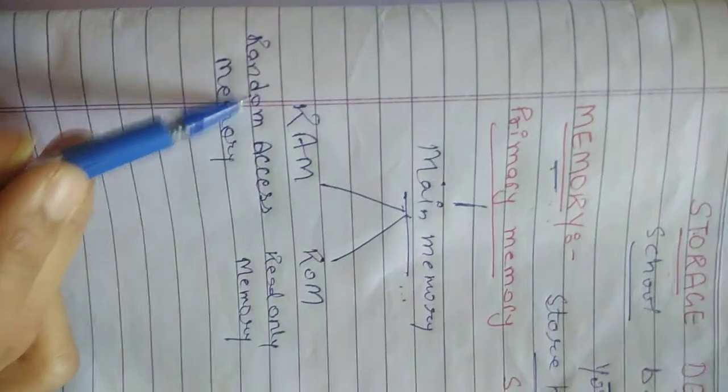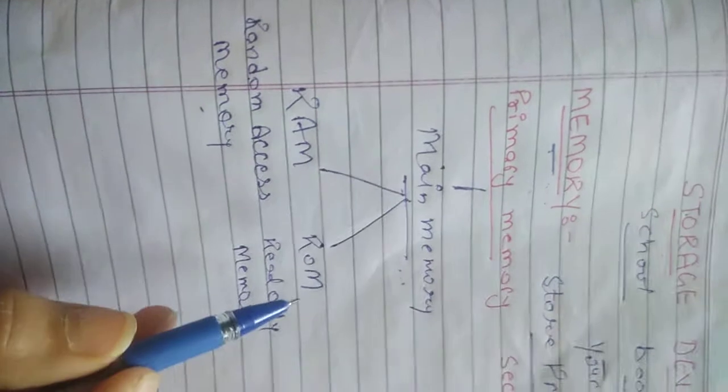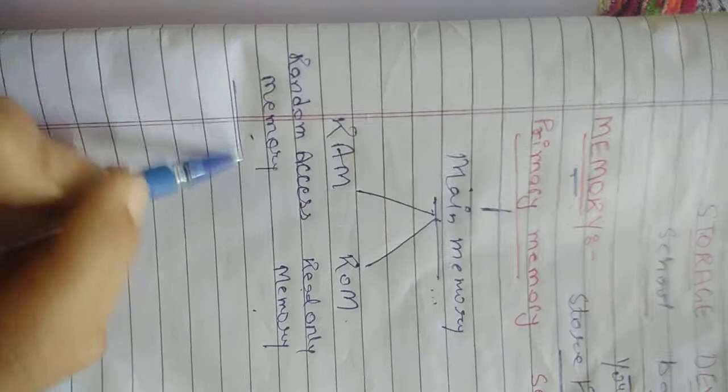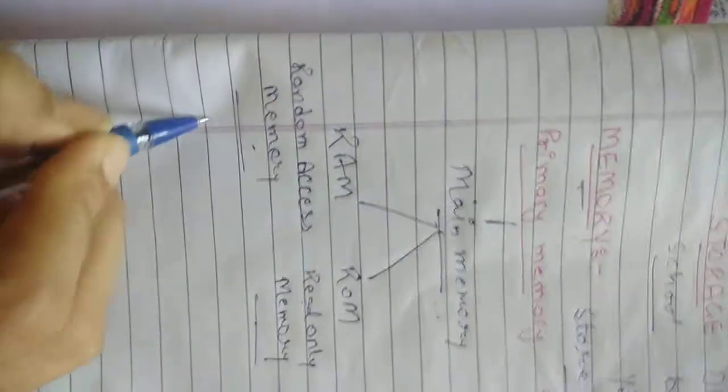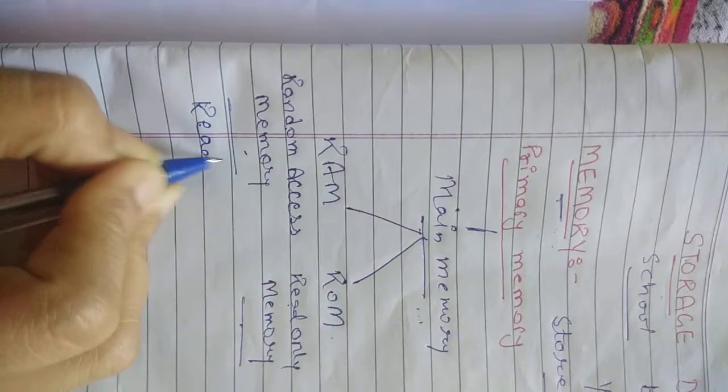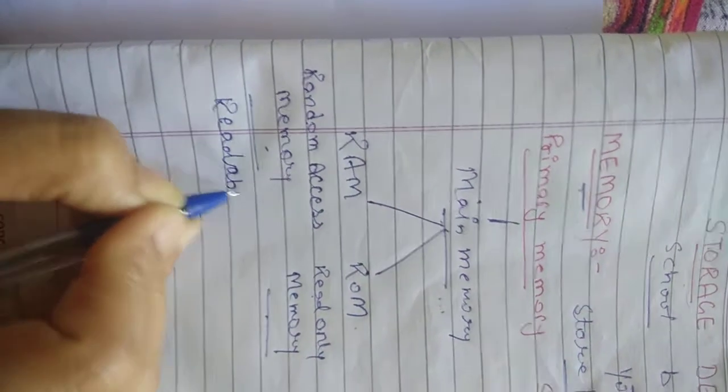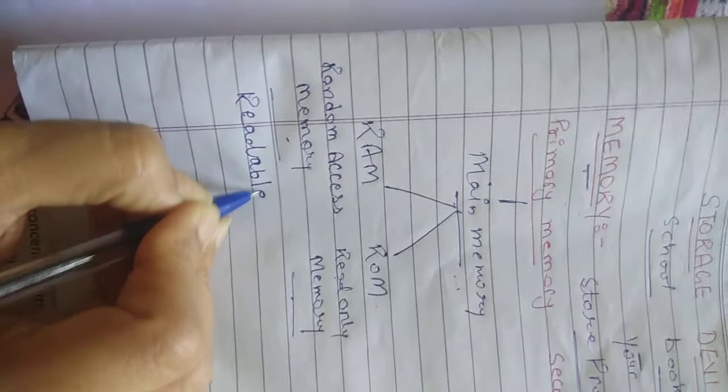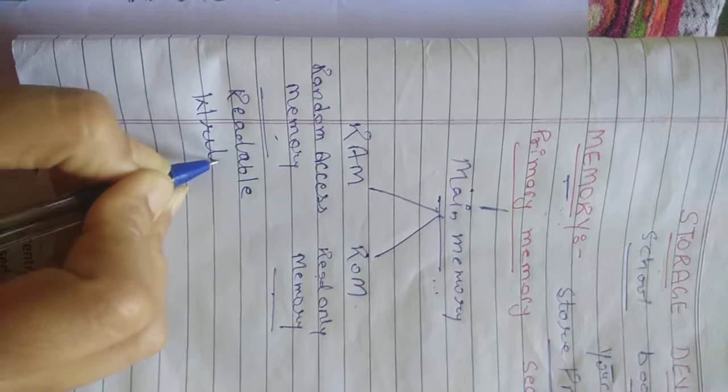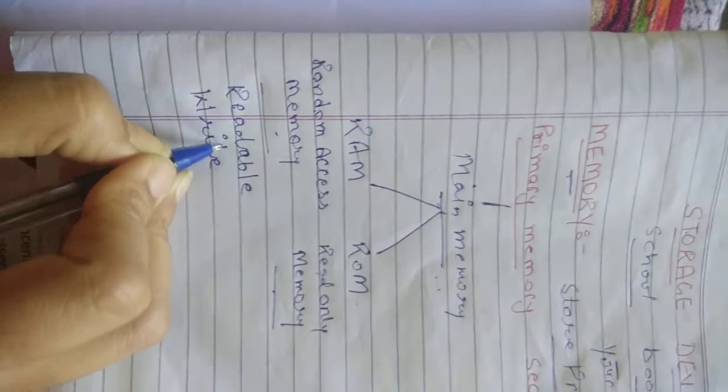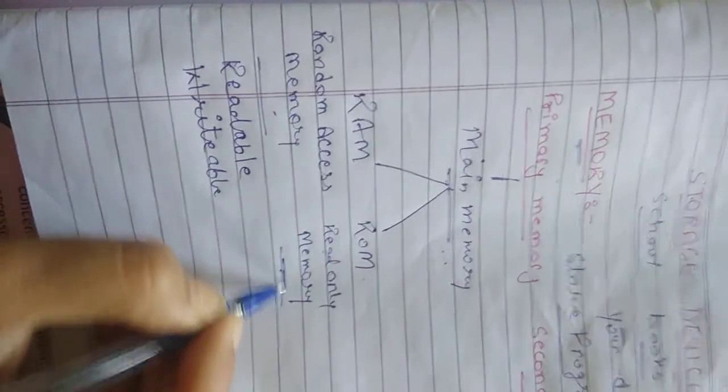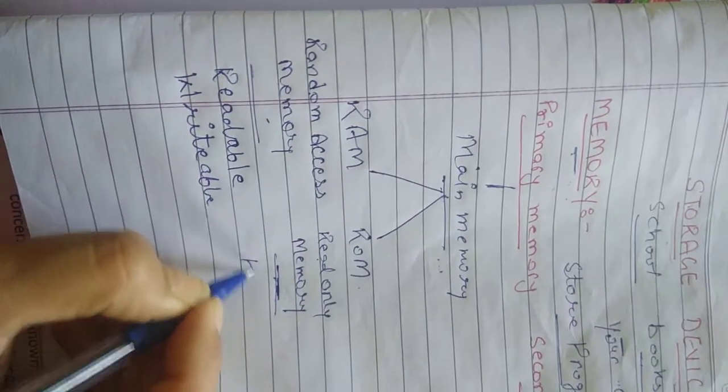RAM stands for random access memory and ROM stands for read only memory. Further we will discuss about these two memories. RAM contains both readable and writable data. But ROM contains only readable data.